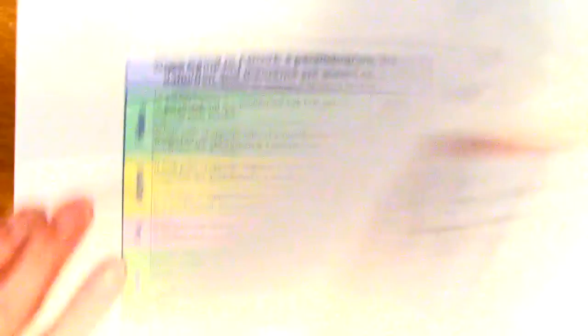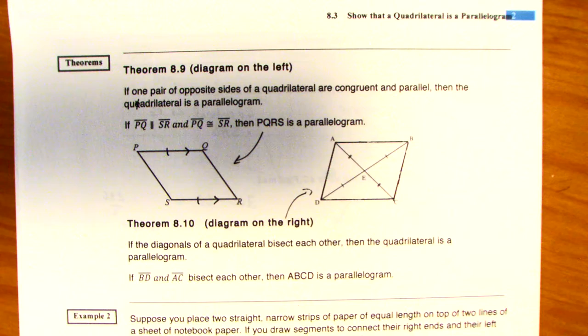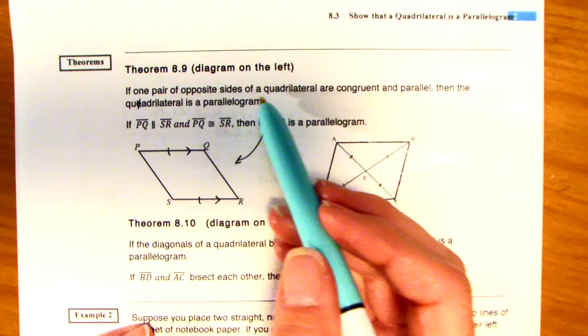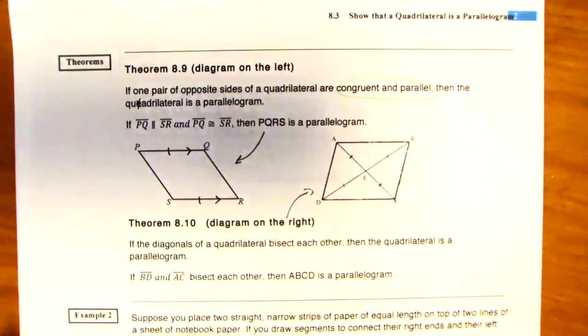I know I might be going fast because I'm not writing down the information, so you can always pause me. Again, 8.9 on the left, 8.10 on the right. So if only one pair of opposite sides are congruent and parallel, just one set, you have a parallelogram. And in this one, if your diagonals are bisected, this is another converse here, then you have a parallelogram.